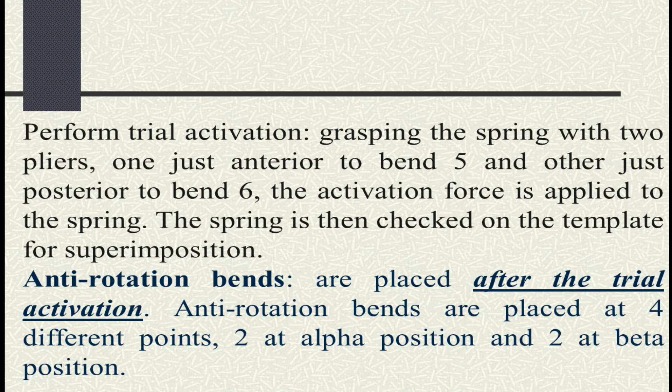Regarding timing: trial activation is done before giving anti-rotation bends — please remember this. How do you check trial activation? By checking the neutral position of the loop. Neutral position is checked in all loops in a similar manner. If you know the neutral position it's well and good; if not, comment below and I'll share a photograph and explain further.